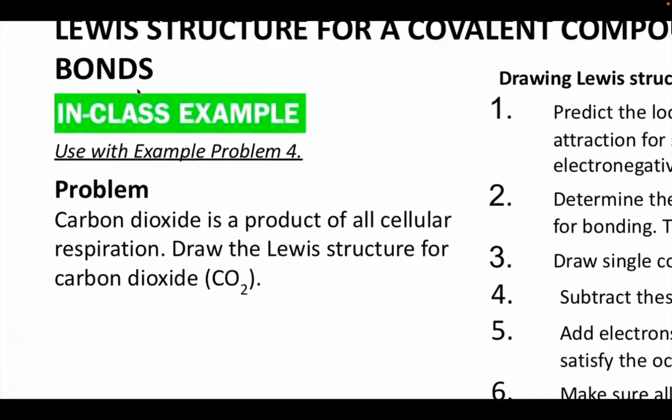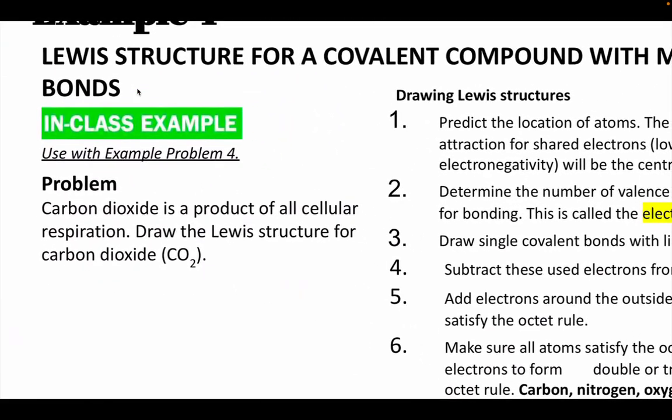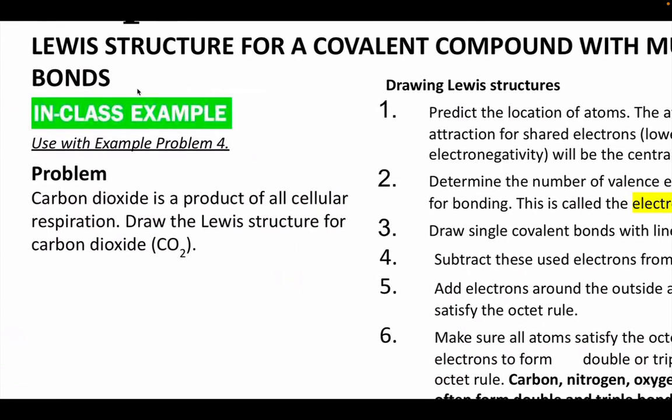Carbon dioxide is really important for plants and lots of different things. We're still going to do the steps that we did when we did the single covalent bonds. I will calculate the cache. There's one carbon with four valence electrons, two oxygens with six each. That's 16 electrons total. That's my cache.